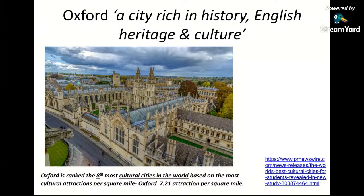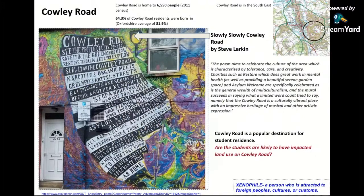Another survey suggests Oxford is ranked eighth on a list of the most interesting global places — truly rich in history and culture. That is a really important part of what Oxford stands for. When talking about the demographic characteristics of Oxford, it's really good to talk specifically about areas rather than generically.